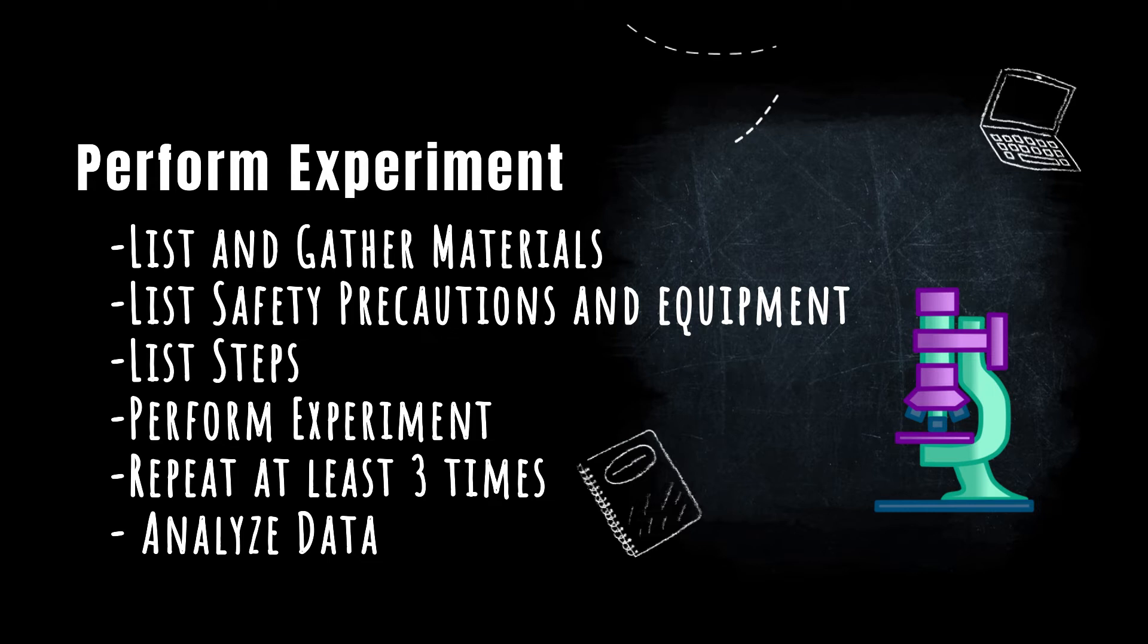Next, list all the steps the person needs to take in order to do the experiment. It is likely that the person doing your experiment has never done it before, so be very specific. Make sure you write down the data as you go and repeat the experiment at least three times. Take the time at the end to analyze your data for any numbers that look different from the rest.